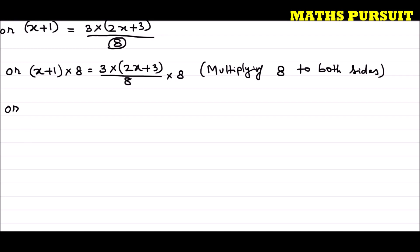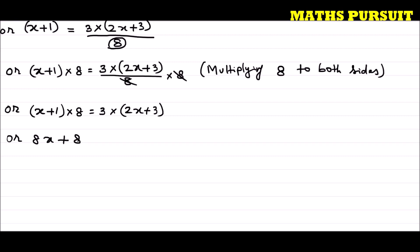So we get x plus 1 into 8 is equal to 3 into 2x plus 3. This 8 cancels out. Or I can write 8x plus 8 is equal to 6x plus 9, multiplying 3 into 2x plus 3.